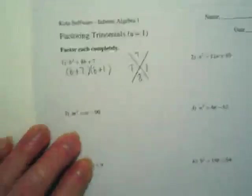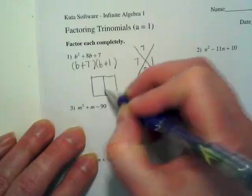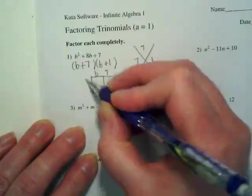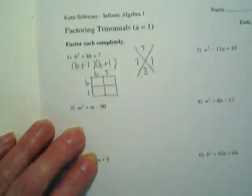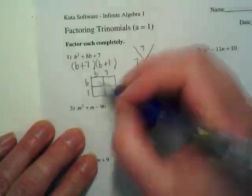And then we're going to check our work by multiplying those two factors. When I multiply B times B, what do I get? B squared.